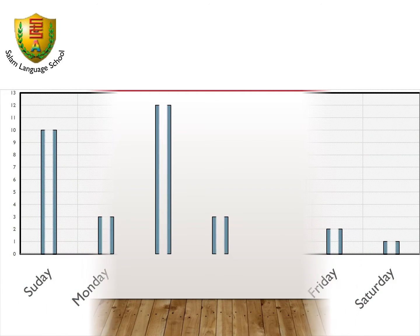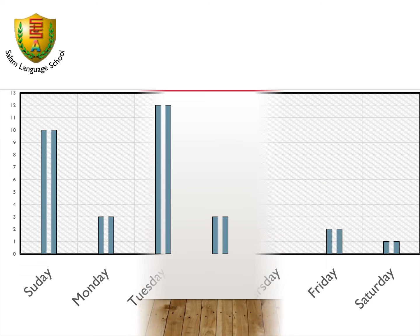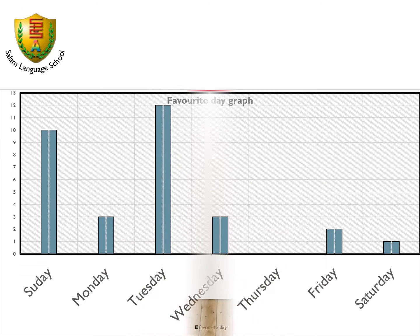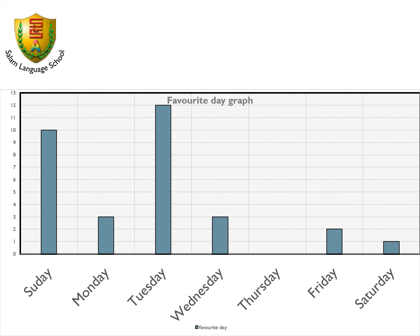Now we go to the favorite day graph. Let's look at the graph. How many students choose Monday as their favorite day of the week? When I ask "how many," you must answer with a number. 3 students.